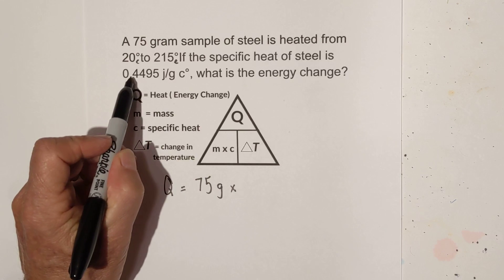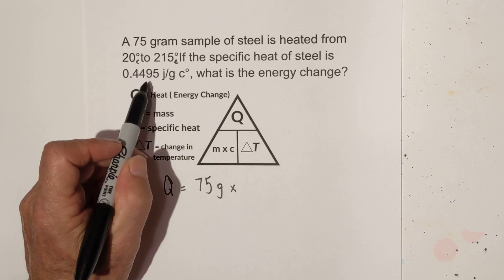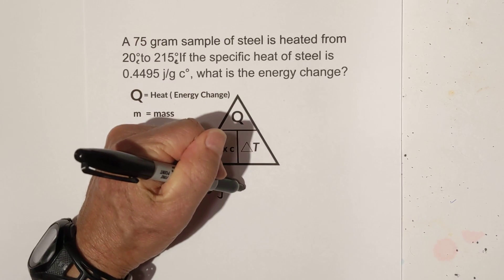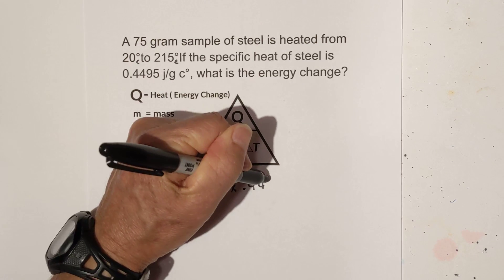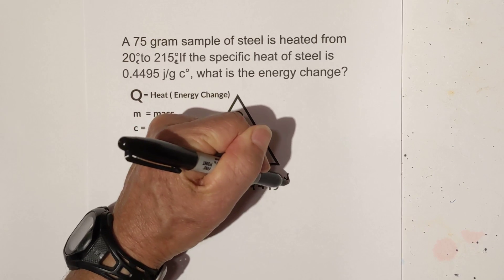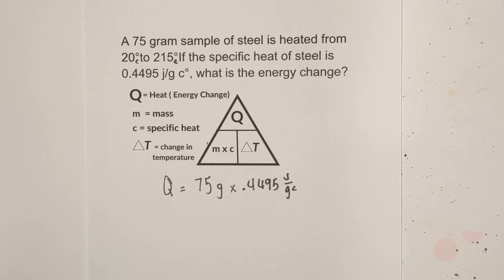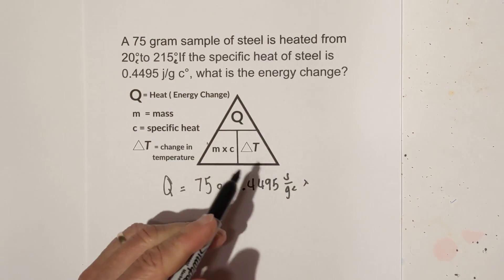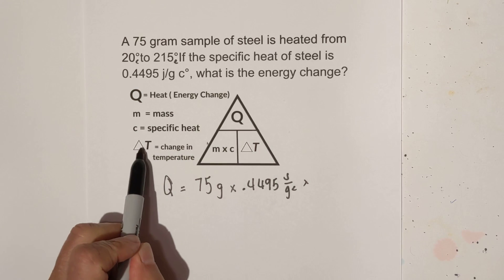And then the specific heat is 0.4495 joules over grams times Celsius. And then we need a change in temperature.